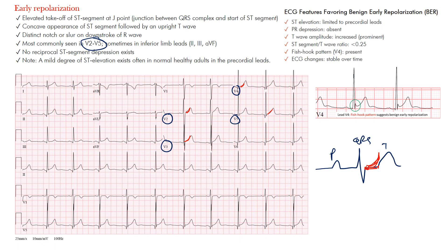You may also see a distinct notch on the downstroke of the R wave. Make sure you're not seeing reciprocal changes in the lateral or inferior leads that would suggest an MI.